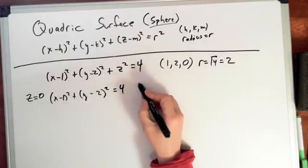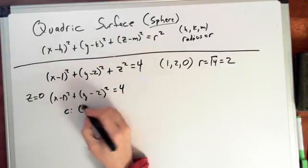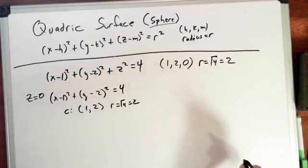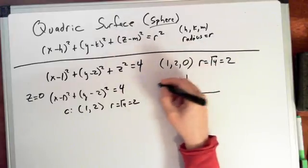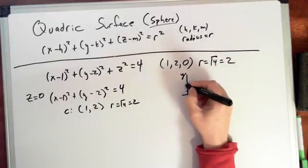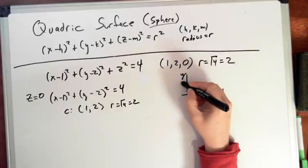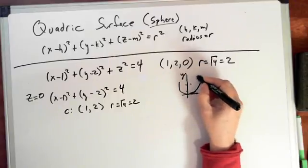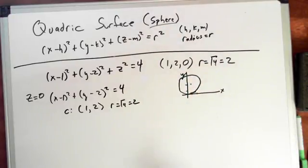From this we know that the center is at 1 and 2, and the radius is equal to the square root of 4, which is equal to 2. So just a quick plot: we're looking at the xy plane with x equal to 1, y equal to 2, and a radius of 2.